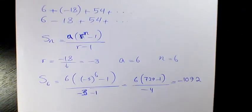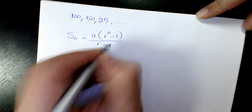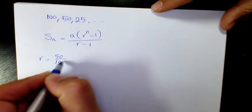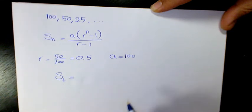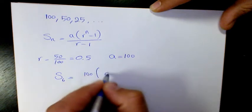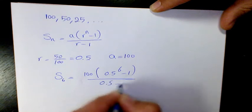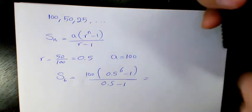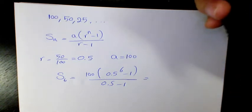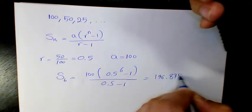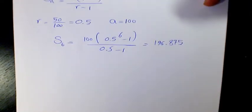In this next example, the formula is again Sn equals a times (r to the power of n minus 1) divided by (r minus 1). The common ratio is 50 divided by 100, which is one half (0.5). a is the first term, 100, and we want the sum of the first 6 terms. So S6 equals 100 times (0.5 to the power of 6 minus 1) divided by (0.5 minus 1), giving 196.875.